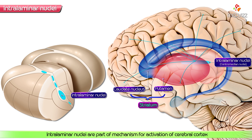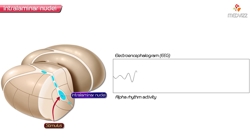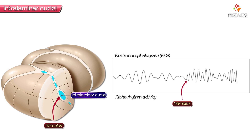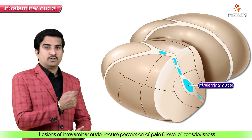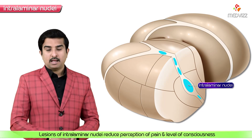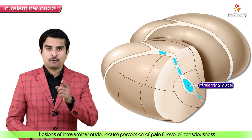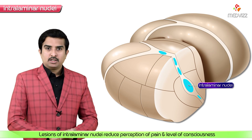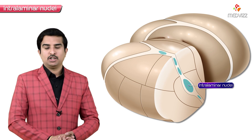The intralaminar nuclei are part of the mechanism for activation of the cerebral cortex. When stimulated, the slow-wave alpha rhythm activity associated with repose and sleep is disturbed, and the electroencephalogram becomes desynchronized. Lesions of the intralaminar nuclei reduce the perception of pain and also the level of consciousness.